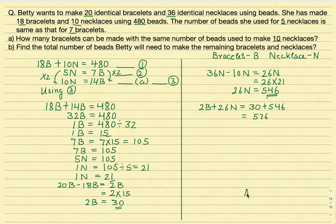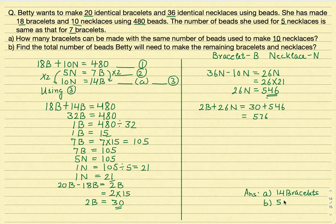Let's write down our answers. Part A: she is able to make 14 bracelets with the same number of beads used to make 10 necklaces. Part B: she needs 576 beads to make the remaining bracelets and necklaces. That's the solution to this question. Hope you liked it — keep watching and don't forget to subscribe. Thank you.